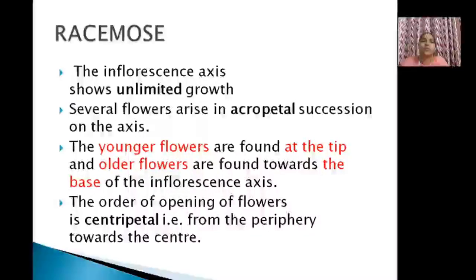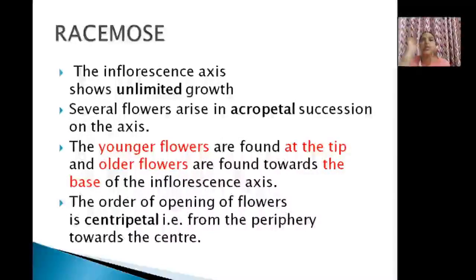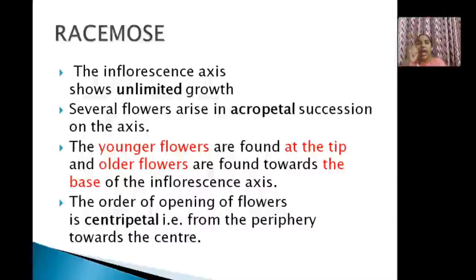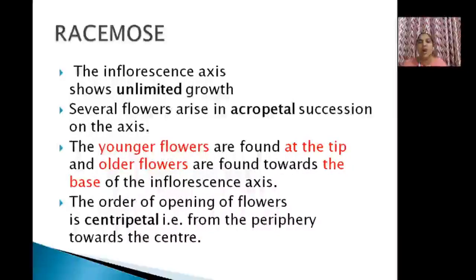The first type is racemose inflorescence. Its peculiarity is that the inflorescence axis shows unlimited growth — the axis continues to grow. Flowers are arranged in acropetal succession, meaning the flowers at the basal part are the older, matured ones, while the flower at the tip is the younger one, usually in bud condition.